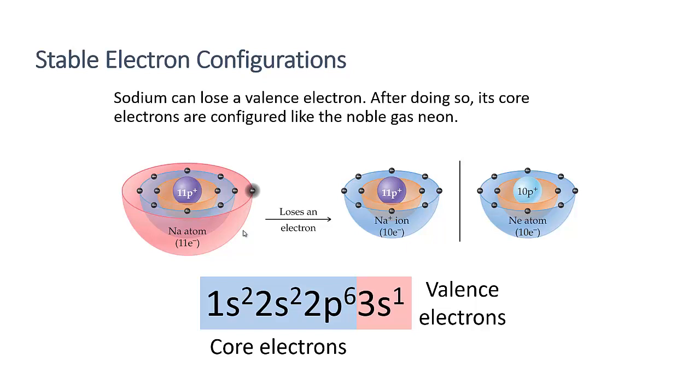So whenever we're thinking about how can we turn any of these cations or any of these elements into cations or anions, we need to be thinking about how many electrons does it have and how many does it need in order to become stable.